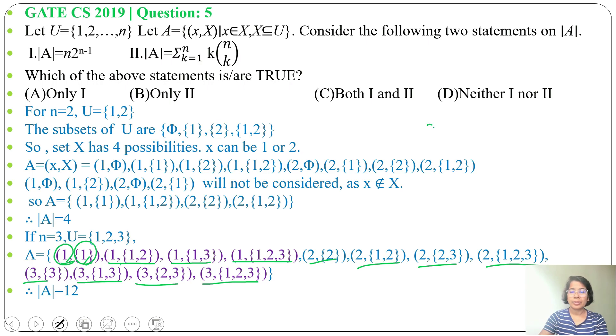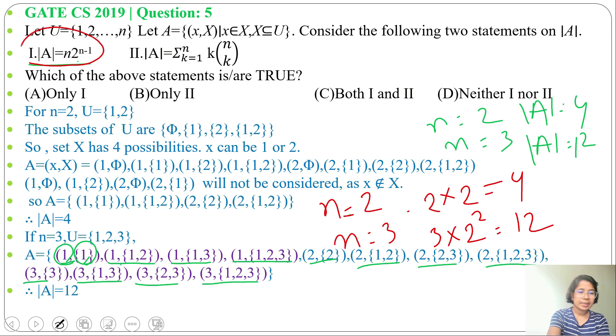Now for n equals 2 we found, n equals 3 we found. For n equals 2, A cardinality equals 4. For n equals 3, A cardinality equals 12. Now just put in the first statement. Select n equals 2. Now 2 times 2 to the power 2 minus 1. 2 minus 1 is 1, so 2 times 2 is 4. When n equals 3, 3 times 2 to the power 3 minus 1 is 2, so 2 to the power 2 is 4, 4 times 3 is 12. It's working. So first statement is true.